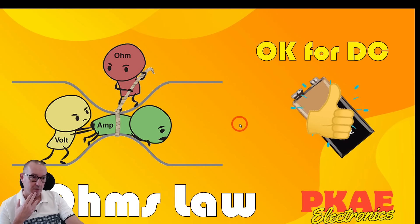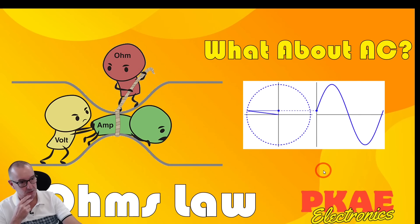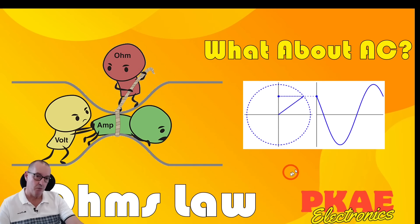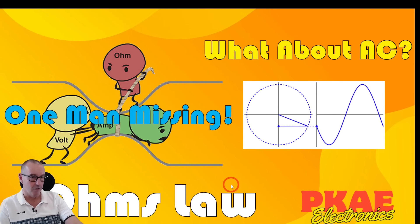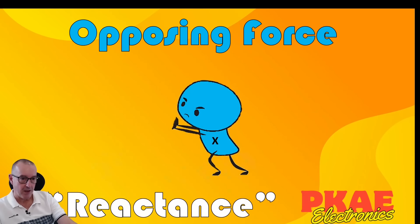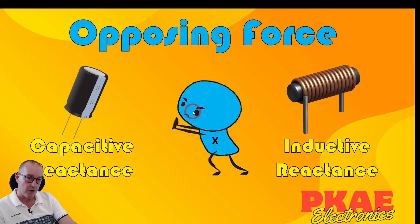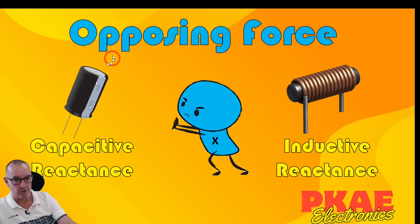This illustration is okay for DC, but what about an AC supply? It doesn't actually work — the illustration is missing one key element. You've still got resistance, but there's another one opposing the force and we're going to call him X. X is actually known as reactance, and he's the opposing force to that current flow. Unlike resistance, which is like friction, this guy is pushing back. There are two types of reactance: capacitive reactance — through capacitors — and inductive reactance.